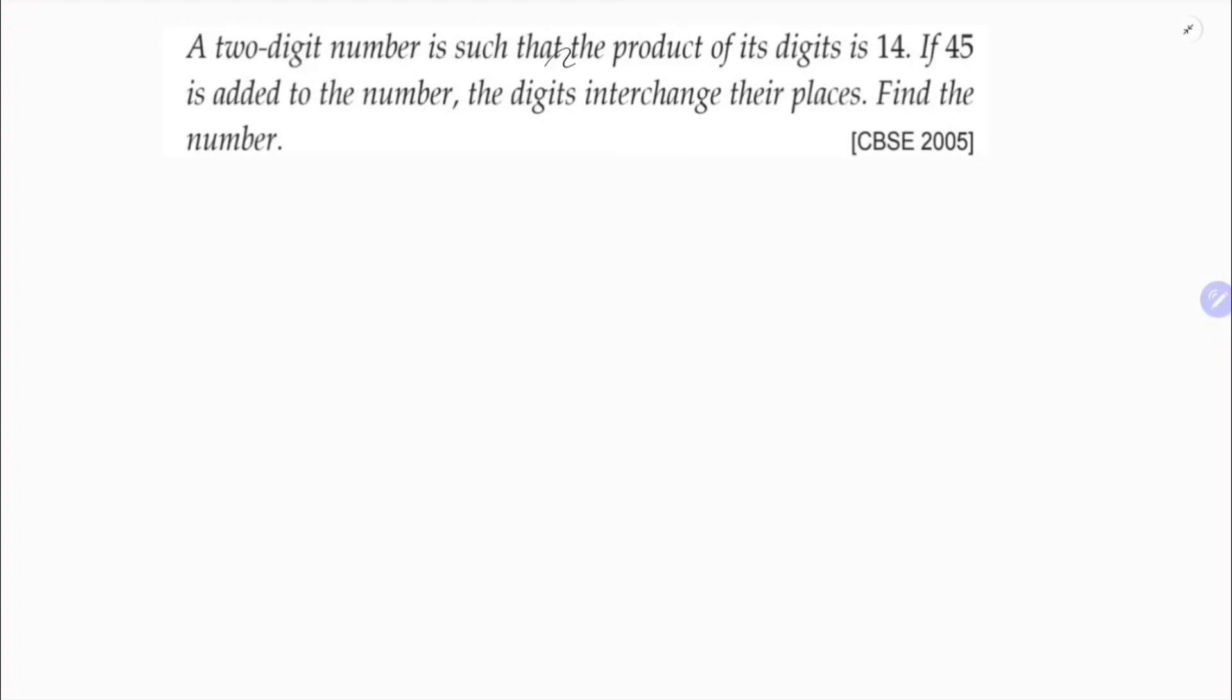A two-digit number is such that the product of its digits is 14. If 45 is added to the number, the digits interchange their places.